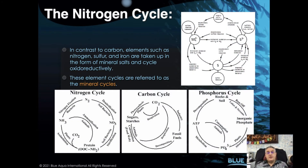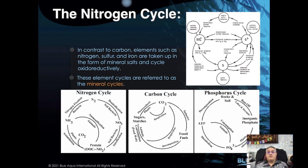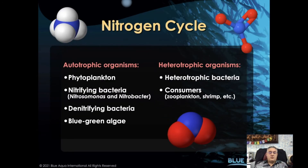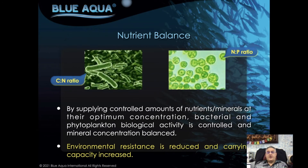Among all the mineral cycles we have, the nitrogen cycle — which contains nitrification — is very very important. It is one of the key things every farmer must understand, as it directly impacts the culture and health of the animal. In a nitrogen cycle there are autotrophic and heterotrophic organisms: bacteria, phytoplankton, nitrifying bacteria, denitrifying bacteria, blue-green algae, and all the consumers. In the shrimp pond, nutrient balance is extremely important — there is a C:N ratio and a nitrogen-to-phosphorus ratio.